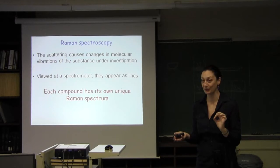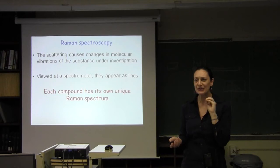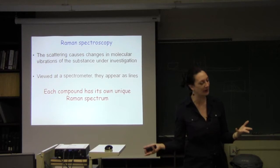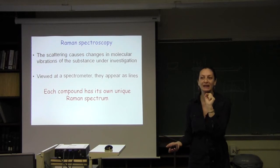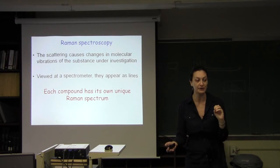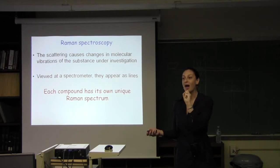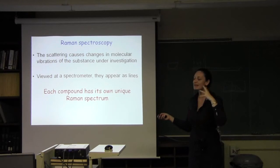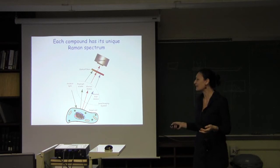The idea is that the scattering of the incident photon causes changes in the vibration of the molecule that is receiving the light, of that substance under investigation. When viewed with the spectrometer, those vibrational changes appear as lines. The bottom line of the story is that each molecule has its own Raman spectrum.